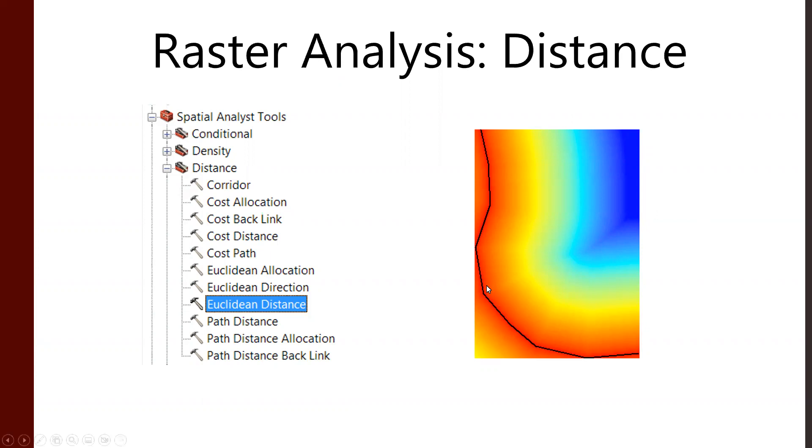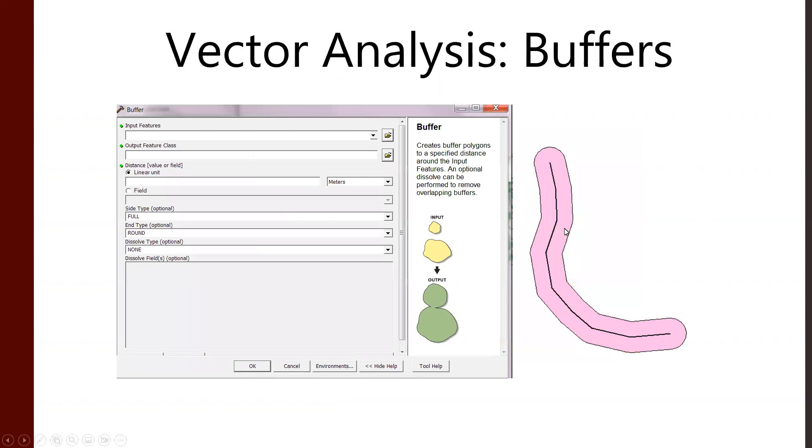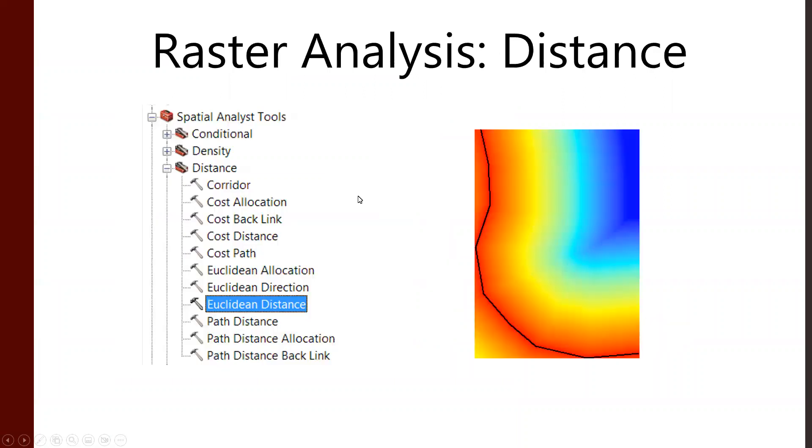It measures distance, shows a distance - different functionalities. With a Euclidean distance, we can tell for each cell how far away each point is. That could be more useful. For a buffer, we get one shape that shows the distance around the thing. Simpler, but could also be useful.